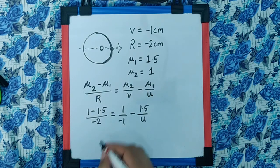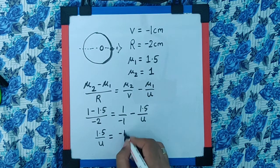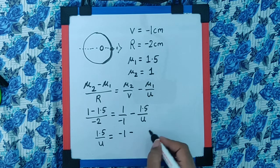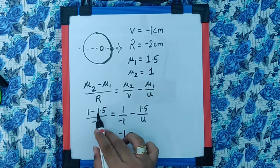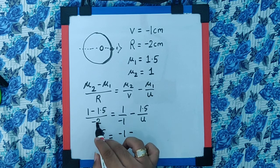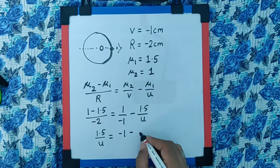Now if I rearrange this equation I get 1.5 by U as minus 1 minus, 1 minus 1.5 is 0.5 negative 0.5, the negative sign gets cancelled. 1.5 by 2 is 1 by 4 with a positive sign going over there becomes negative 1 by 4. Now calculating this we get this as minus 5 by 4.